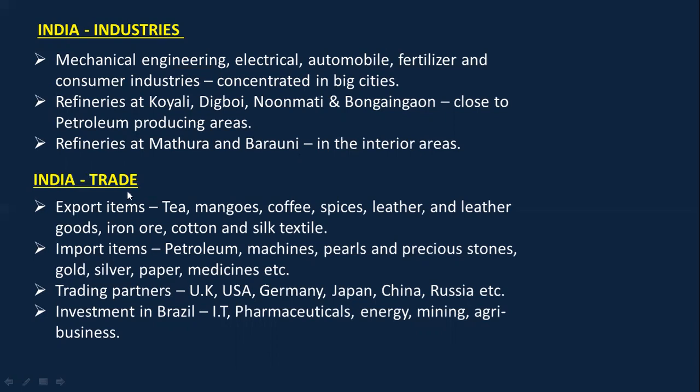Refineries are at Koyali, Digboi, Noonmati, and Bongaigaon — close to petroleum producing areas. Refineries are also found at Mathura and Barauni in interior areas. The items exported from India are tea, mangoes, coffee, spices, etc., and imports include petroleum, machines, pearls, precious stones, and many other things. Trading partners of India are majorly UK, USA, Germany, Japan, China, and Russia.